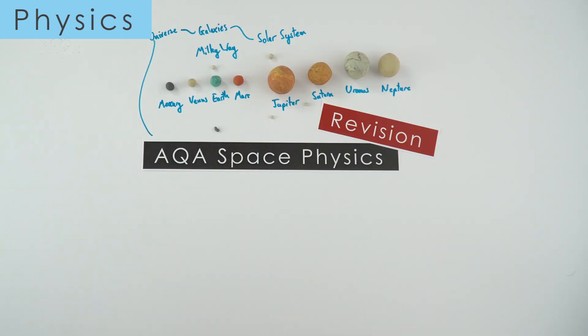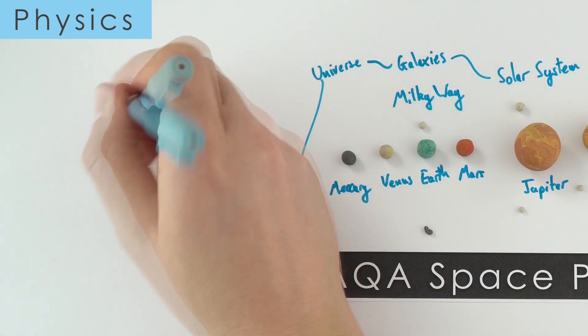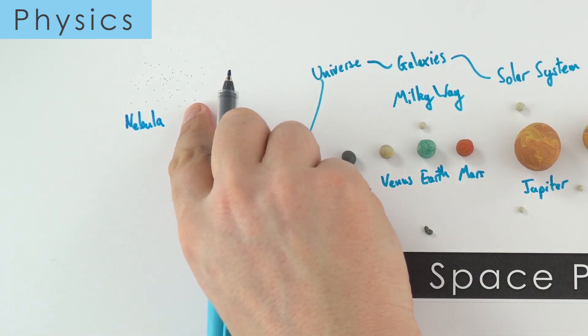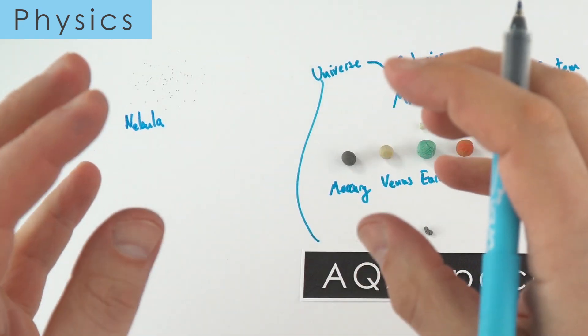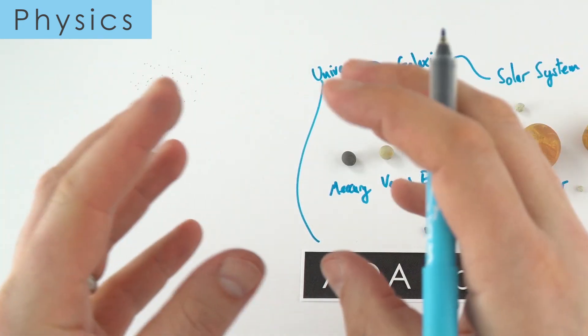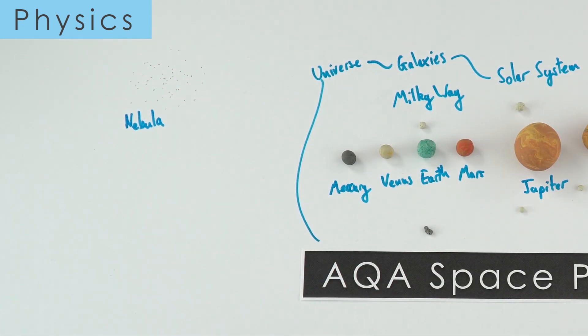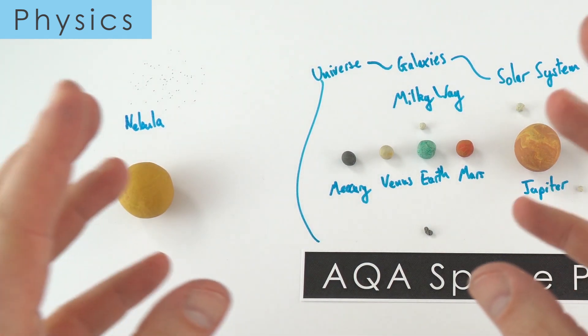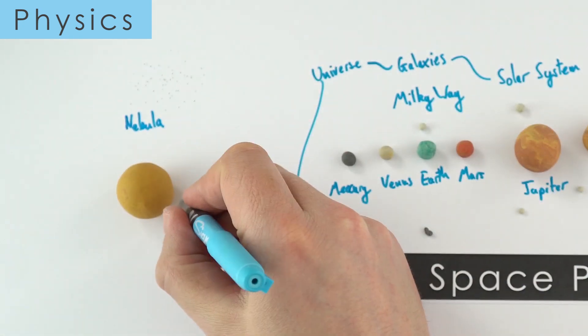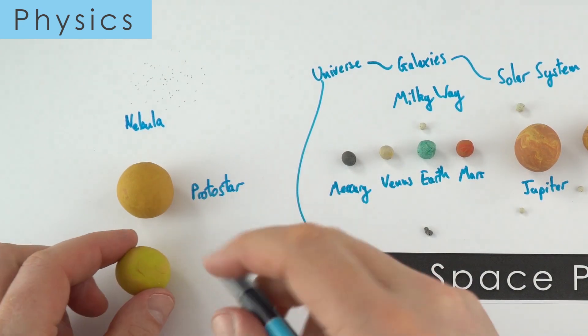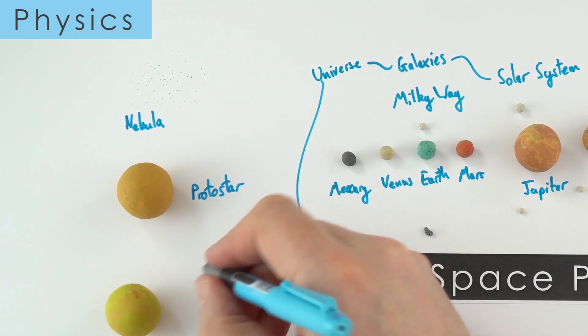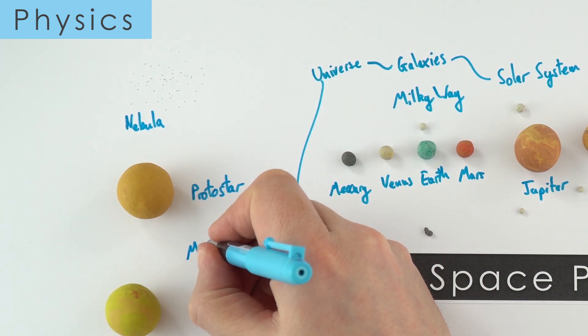But where did our sun come from? Well it started out in a nebula. Now a nebula is just a massive cloud of dust and gas and all of these particles are attracted to one another due to force of gravity. When they come together they lose some of their potential energy and that's transferred to their kinetic energy store. This then forms what we call a protostar, and eventually this protostar turns into what we call a main sequence star.